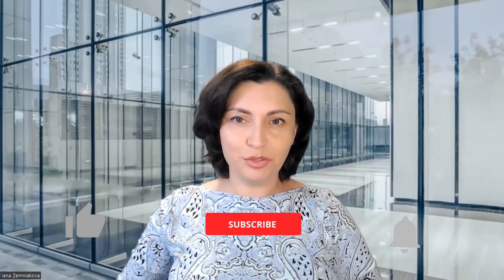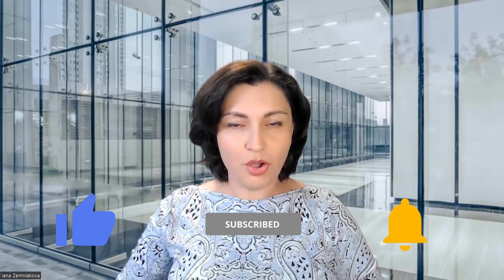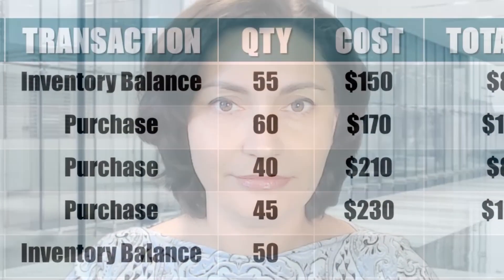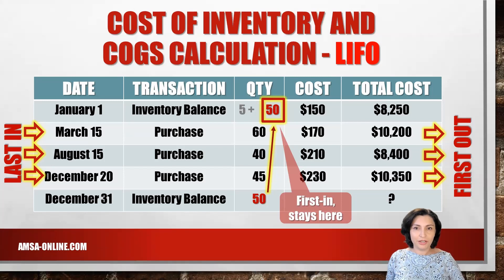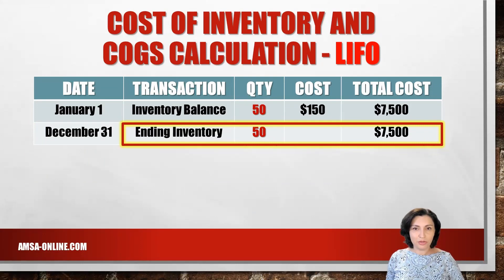Now let's compute inventory cost using the last-in, first-out or LIFO method. Under LIFO, the last units purchased are assumed to be sold first, and the ending inventory is made up of the first purchases. Therefore, the entire 50 units in ending inventory is valued at the beginning inventory amount of $150 per unit, resulting in an ending inventory of $7,500.